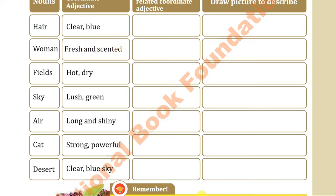'Clear blue sky' is repeated at the end. Anyhow, you can write these in the third column, and then you can draw small pictures in the fourth column to describe them. It was just an exercise to show how adjectives are used with nouns.